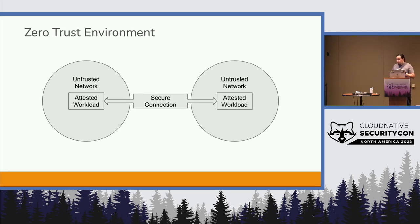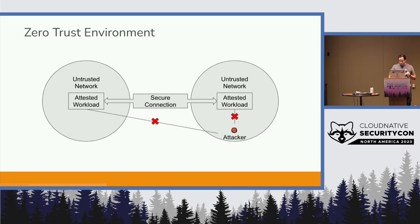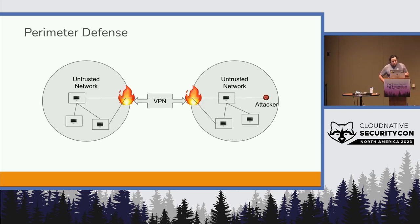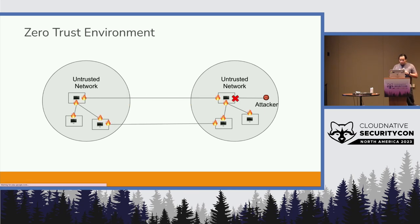What we want to push towards is something where you have secure connections — the networks are untrusted, which doesn't mean they're uncontrolled, but they're untrusted — and you want to create secure connections between workloads where the workloads are validating their respective identities. So we want to shift away from purely perimeter defense towards something where the controls are effective, closer, and have more context. The attacker trying to connect to a system they don't have access to faces more fine-grained rules on a per-service, per-communication basis.